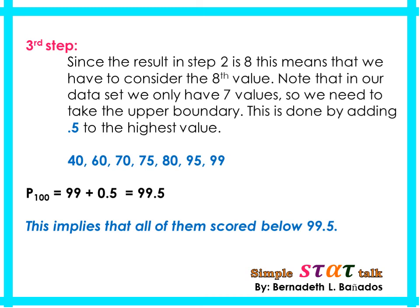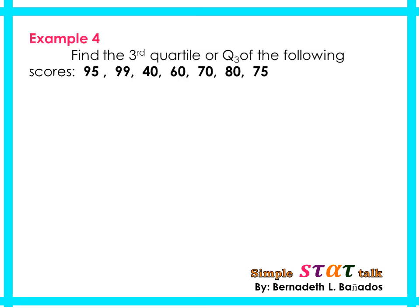The value obtained is 8, meaning we need the 8th value. But as you can see, we only have 7 scores. To determine the 8th value, add 0.5 to the highest value. The highest value is 99, so 99 plus 0.5 gives us 99.5. Therefore, P sub 100 equals 99.5. This means all of the students scored below 99.5.